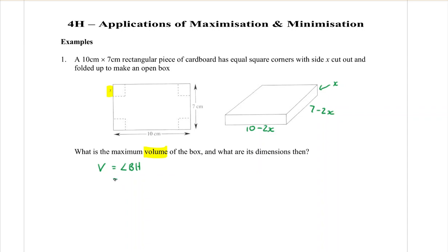Volume equals — I'm going to put the x first — times the breadth, which is 10 take away 2x, times the height, which is 7 take away 2x. Now I'm trying to find a maximum, which means I'm going to need to differentiate this. We can differentiate single brackets, but not really three things multiplied together, so we're going to have to expand this out.